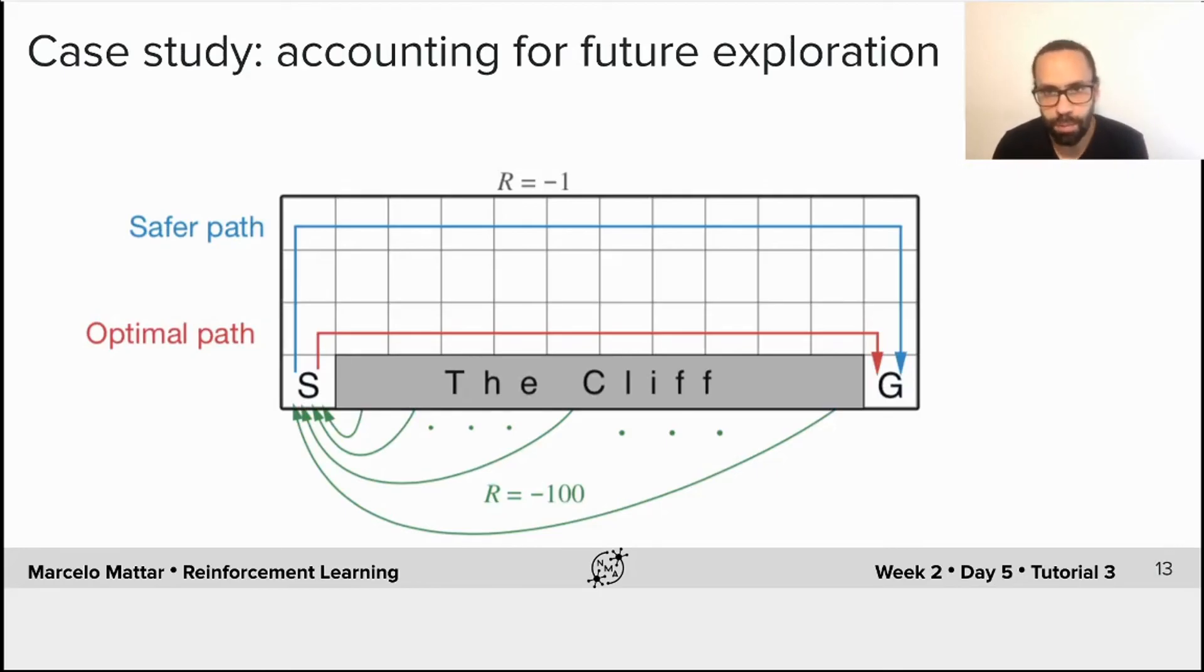And this tiny difference can actually end up having pretty large consequences. For example, in the cliff world, Q-learning can be too optimistic. By estimating the value of the action in terms of the best action available in the next state, which may not be what the agent would actually do in practice, the agent may end up taking a riskier path, shown in red, which can lead to the agent falling over the cliff if it takes an exploratory random action, for example.